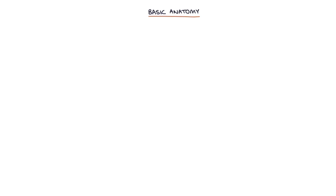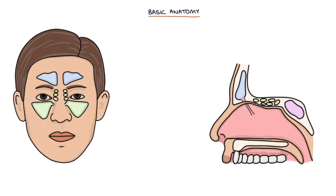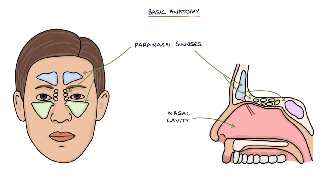Let's talk about some basic anatomy. The paranasal sinuses are hollow spaces within the bones of the face, arranged symmetrically around the nasal cavity. They produce mucus and drain into the nasal cavities via holes called ostia. Blockage of the ostia prevents drainage of the sinuses, resulting in sinusitis.